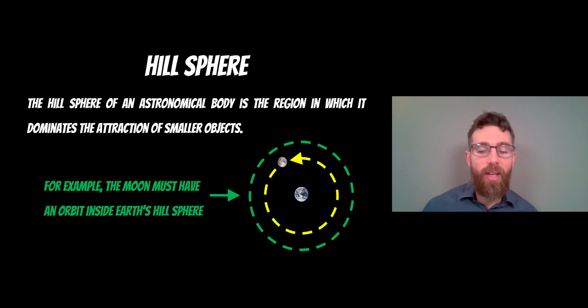So for example, if we had the Earth, then the Moon would have to have an orbit inside the hill sphere.